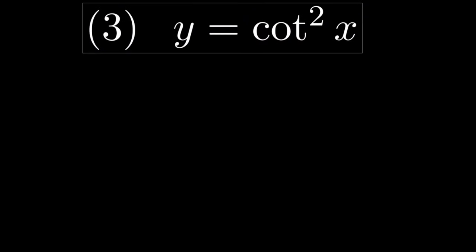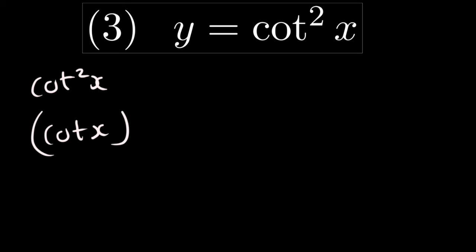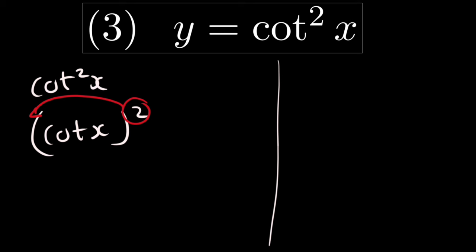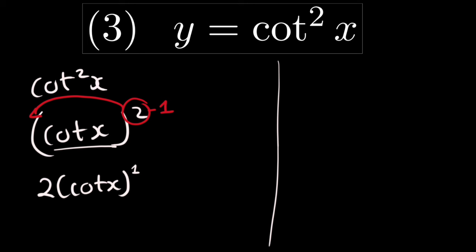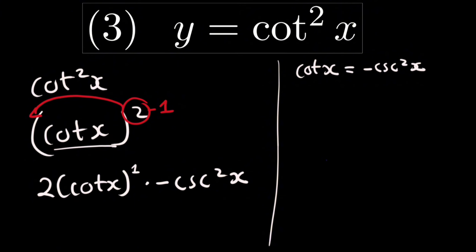For question three, we have cot squared x, which can also be written as (cot x) squared. Using the power rule, we take 2 and multiply by the coefficient to get 2, then write cot x and subtract 1 from the power: 2 cot x power 1. After that we derive cot x, whose derivative is negative cosec squared x. So the final answer is negative 2 cot x multiplied by cosec squared x.